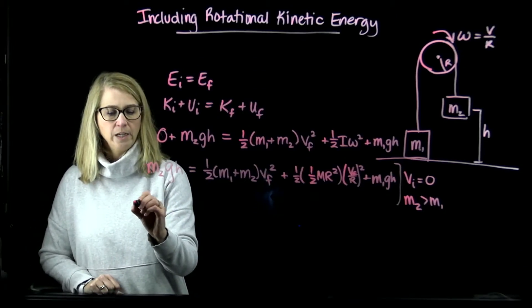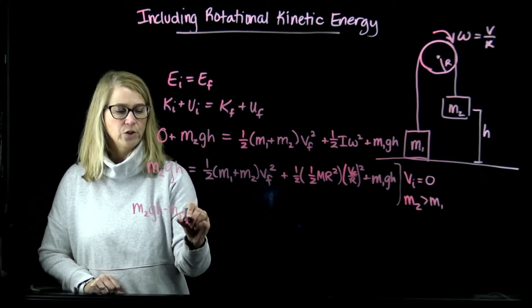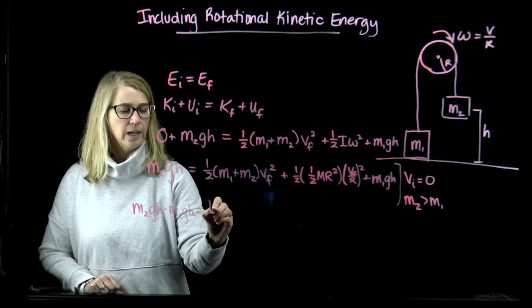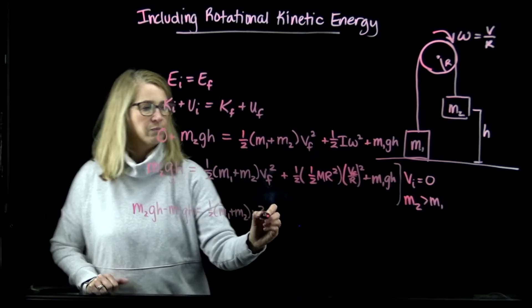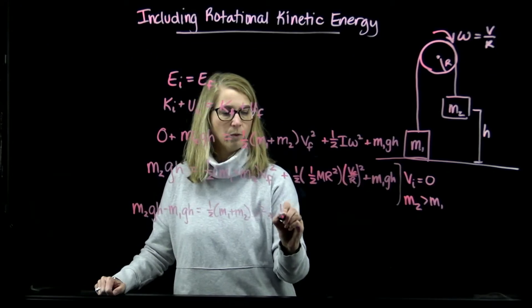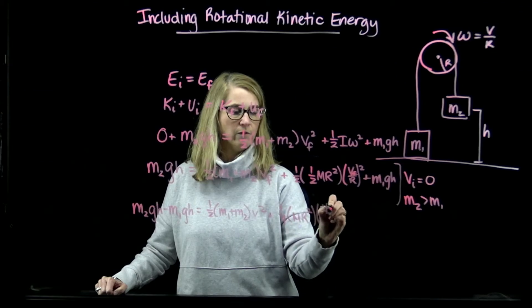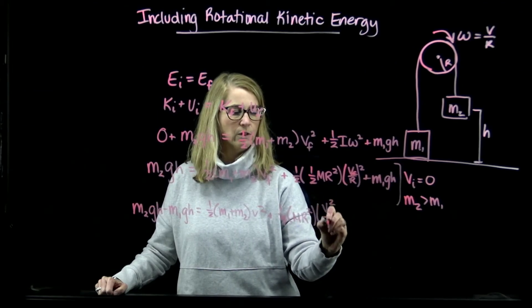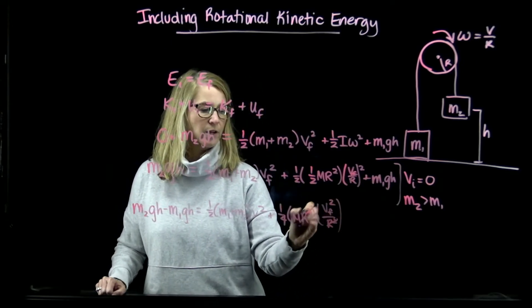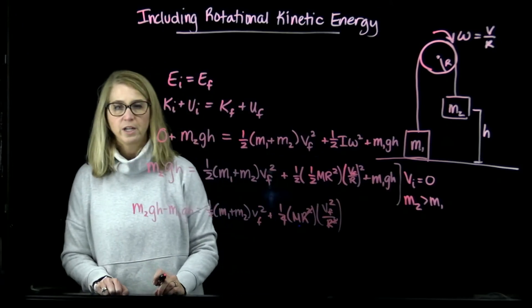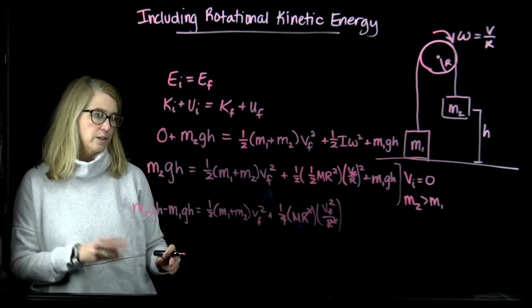Here I'm going to get m2gh minus m1gh is equal to 1/2(m1+m2)v², and then this is going to be equal to 1/4 Mr² times vf² over r², and so you see that the r's are going to cancel out.